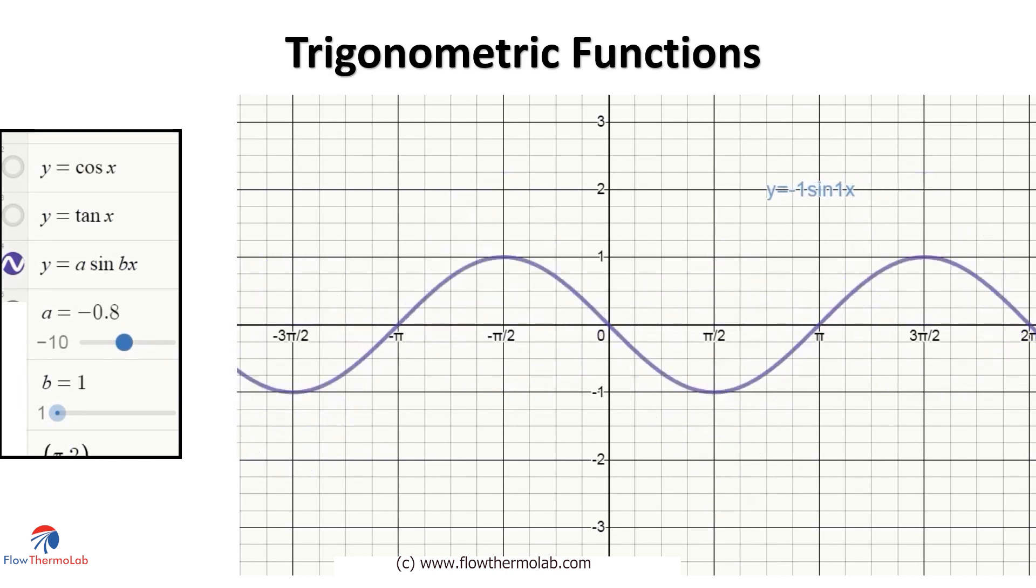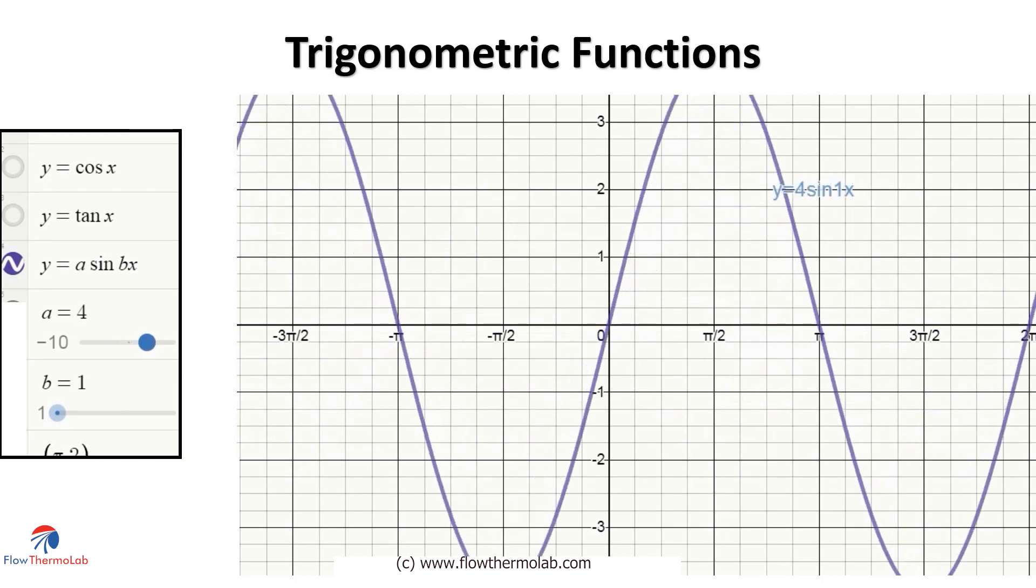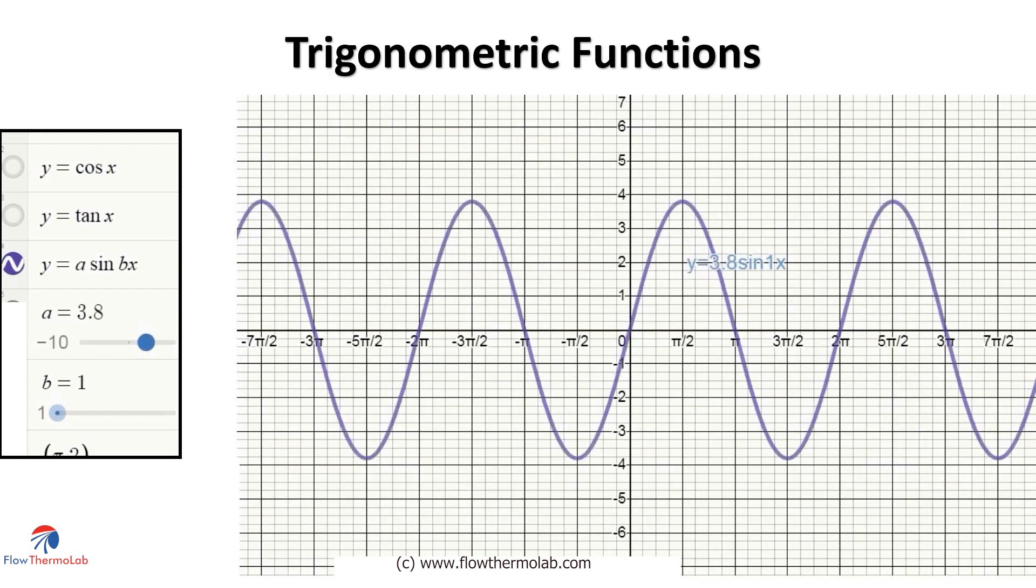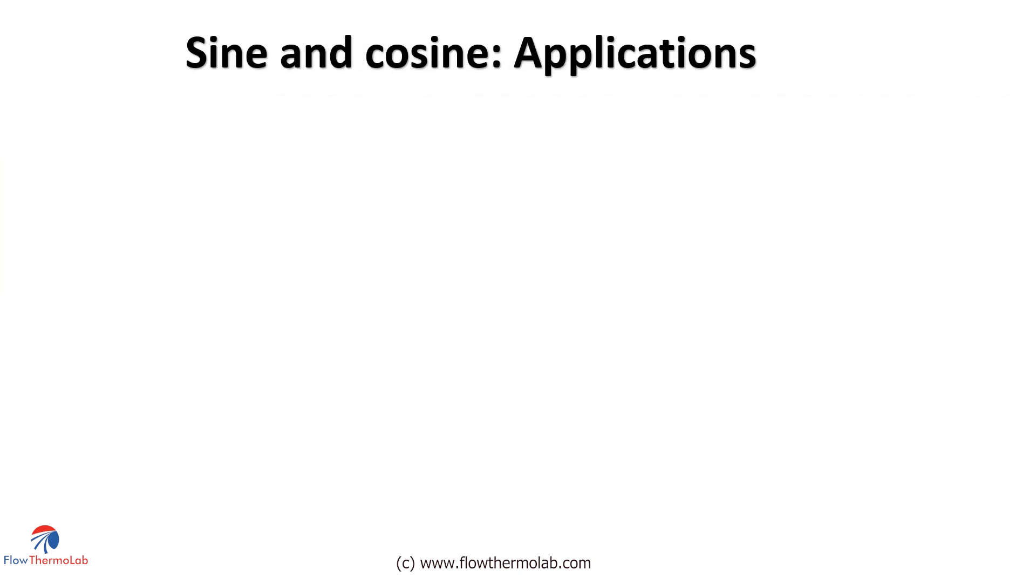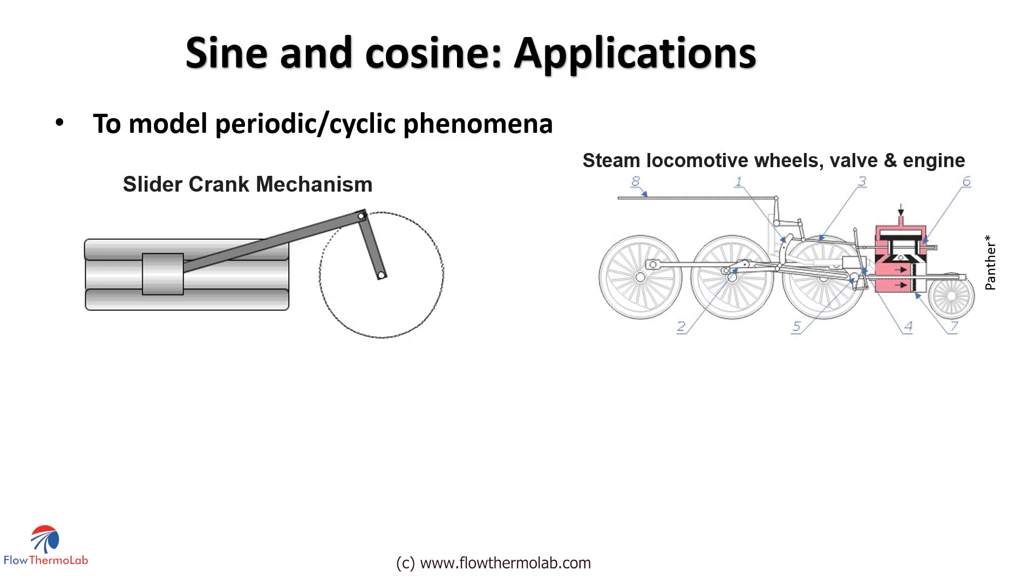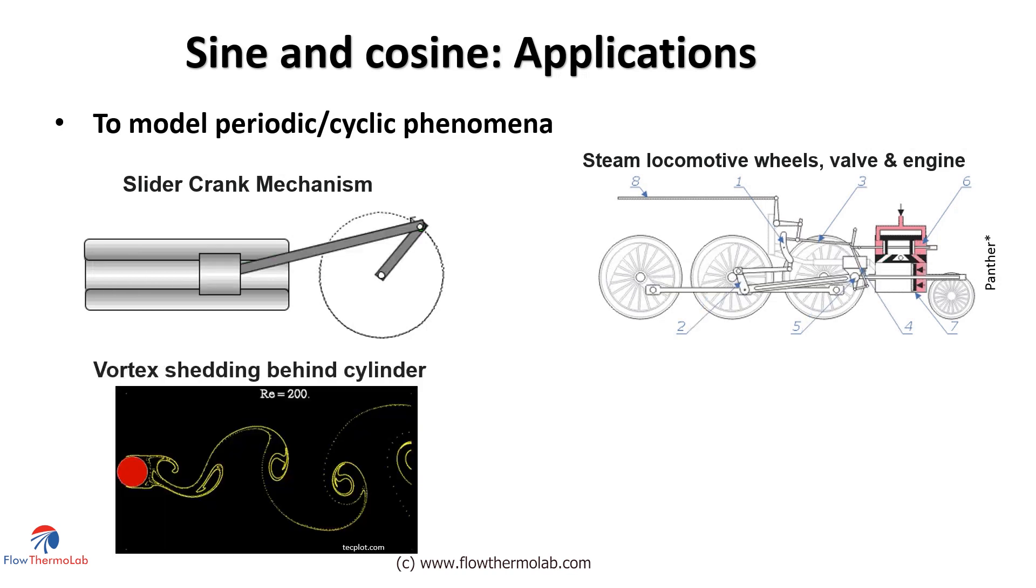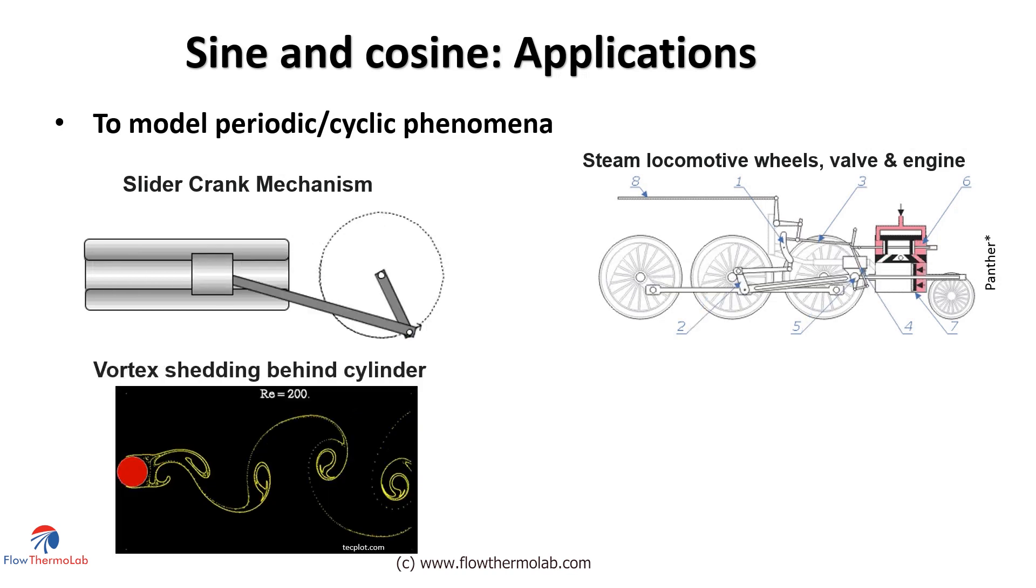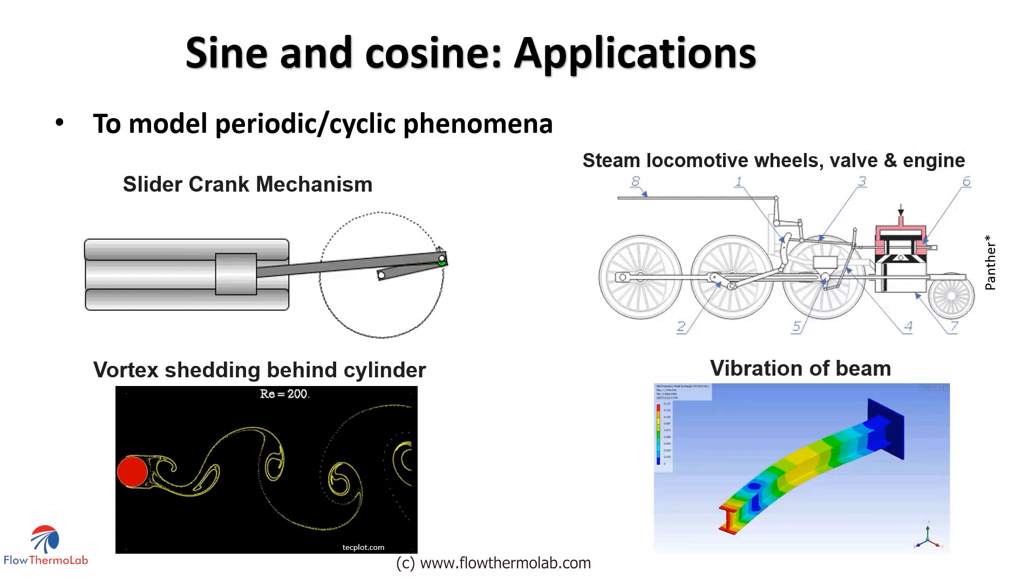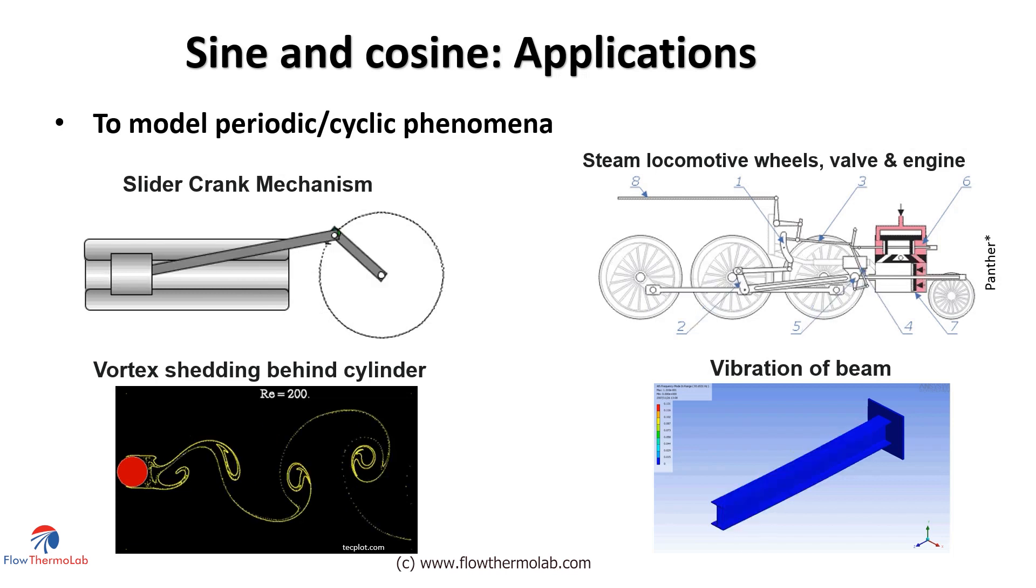There are many engineering applications for these functions. All the periodic phenomena which repeats are mathematically modeled by using sine and cos functions. For example, the equation of a slider crank mechanism. This is the mechanism used for the movement of a piston in an internal combustion engine, then in locomotives, including the motion of valves, engine etc. In fluid mechanics, to model the phenomena like vortex shedding behind a cylinder. And in structural engineering, for example, to model the vibration of a beam. So for all these applications, trigonometric functions are widely used.